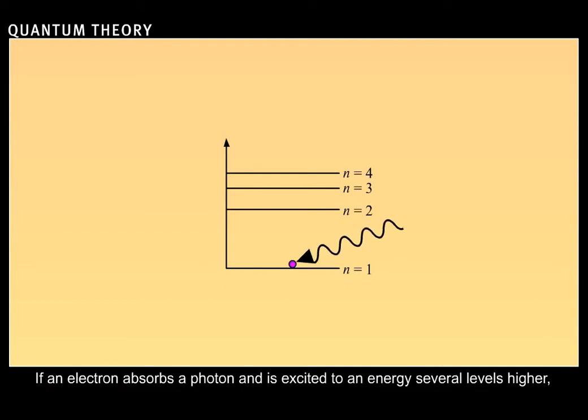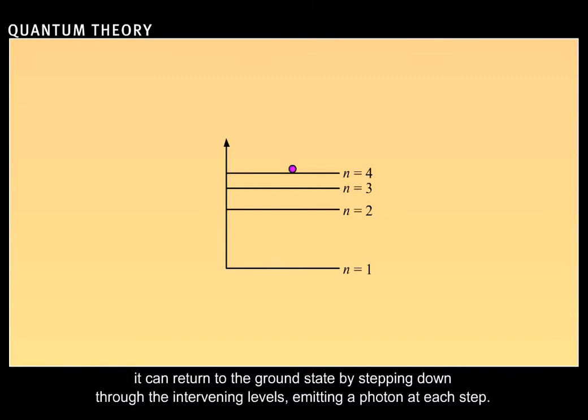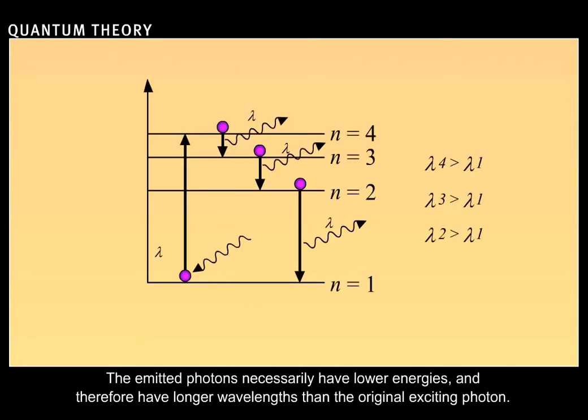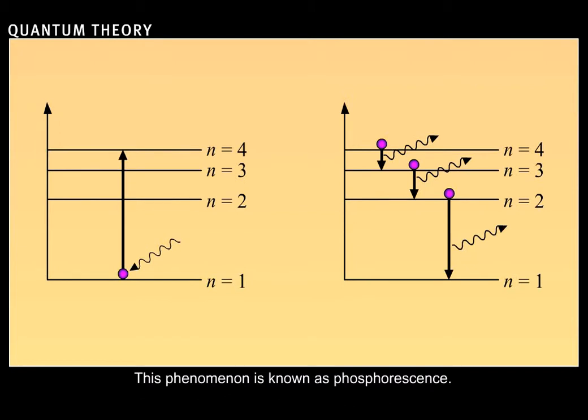If an electron absorbs a photon and is excited to an energy several levels higher, it can return to the ground state by stepping down through the intervening levels and emitting a photon at each step. The emitted photons necessarily have lower energies and therefore have longer wavelengths than the original exciting photon. This phenomenon is known as phosphorescence.